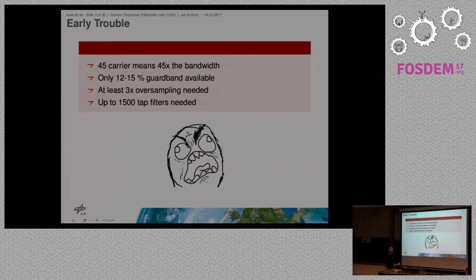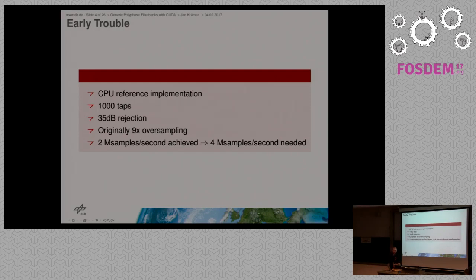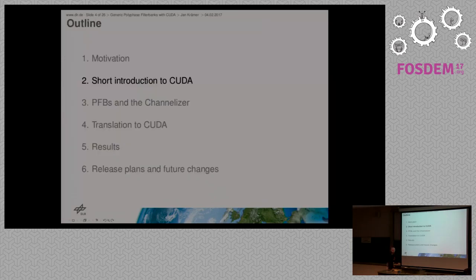I wrote a generic CPU implementation. I used a 1000-tap filter with just 35 dB rejection, did the original nine times oversampling, and came up with two mega samples per second — well, I needed four, so it was not fast enough. I tried to look into how to optimize it for x86 processors, but actually the filtering was already maxed out from optimization. I could have optimized the FFT somehow since I couldn't use FFTW, but that would take way too much time. So I thought: let's just try it on CUDA since I had some experience with it.